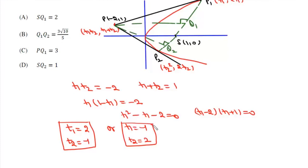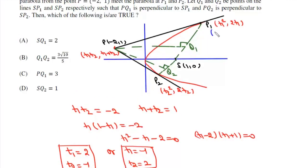If T1 is minus 1, then T2 is 2. So we have two cases: either T1 is 2 and T2 is minus 1, or T1 is minus 1 and T2 is 2. Taking T1 as 2, P1 is (4, 4), and with T2 as minus 1, P2 is (1, minus 2). In the second case, P1 is (1, minus 2) and P2 is (4, 4).